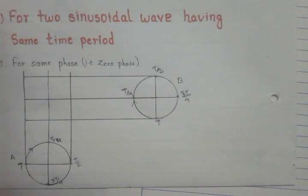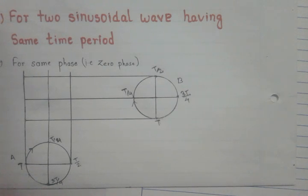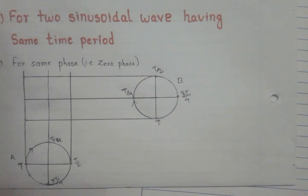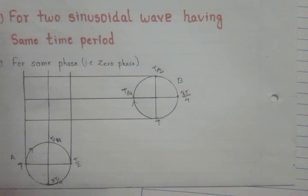Today I am going to discuss about Lissajous figures. A Lissajous figure is the resultant path traced out by a particle when it is acted upon by two simple harmonic motions which are perpendicular to each other. That means the propagation of the two simple harmonic motions must be perpendicular to each other.